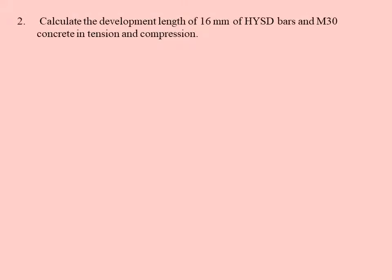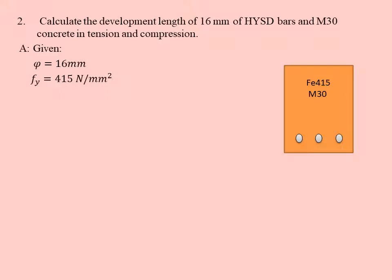This is the second question. Calculate the development length of 16 mm HYSD bars and M30 concrete in tension as well as compression. HYSD bars is Fe 415 steel. I have drawn it out, Fe 415, and we are using M30 concrete. Now we write the given details: φ is the diameter of the bar.